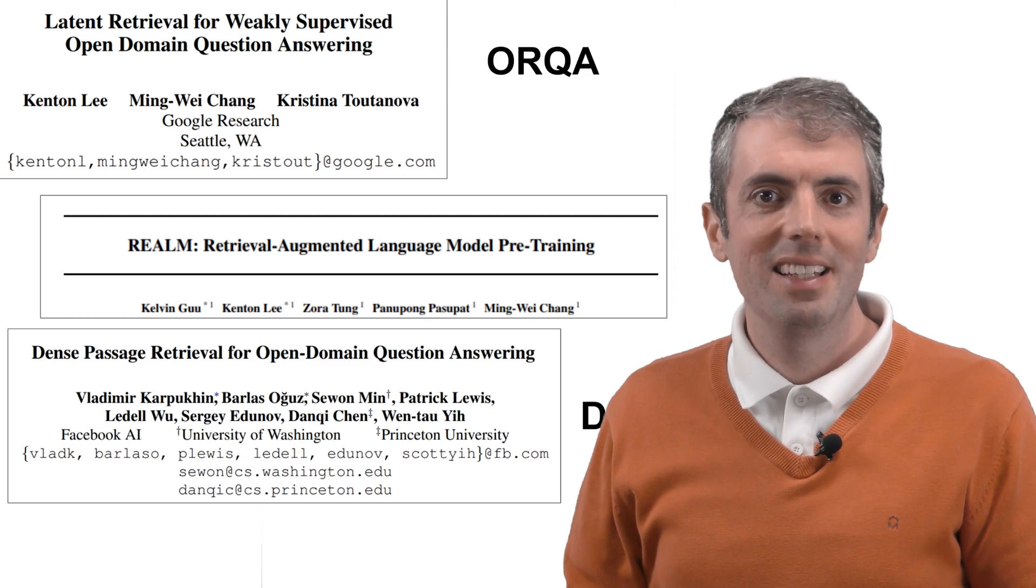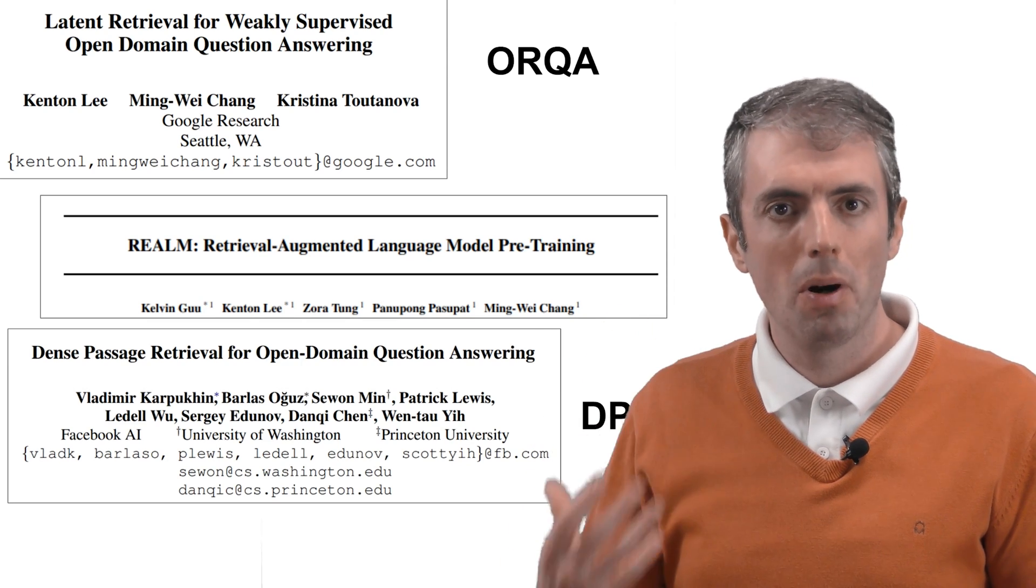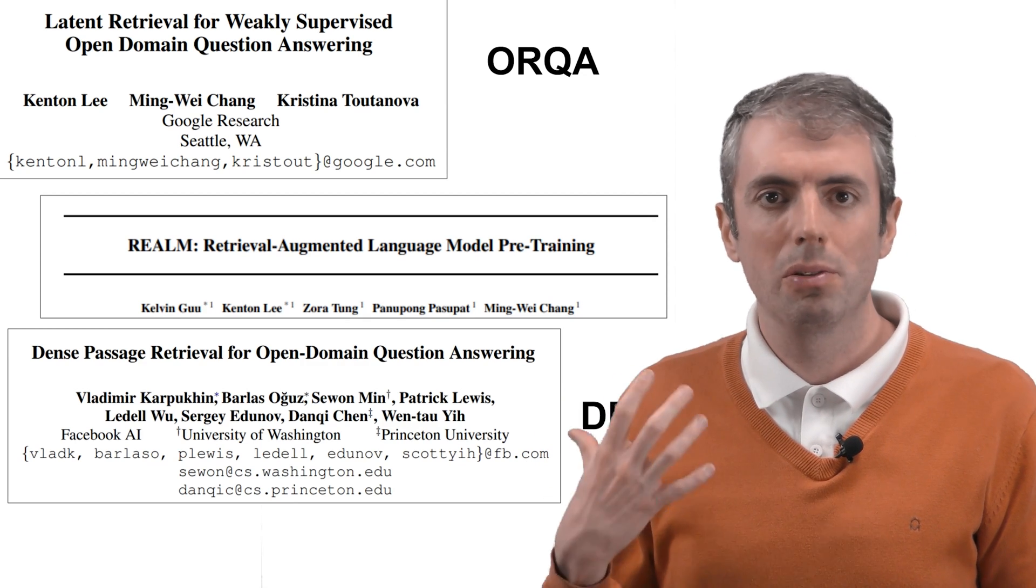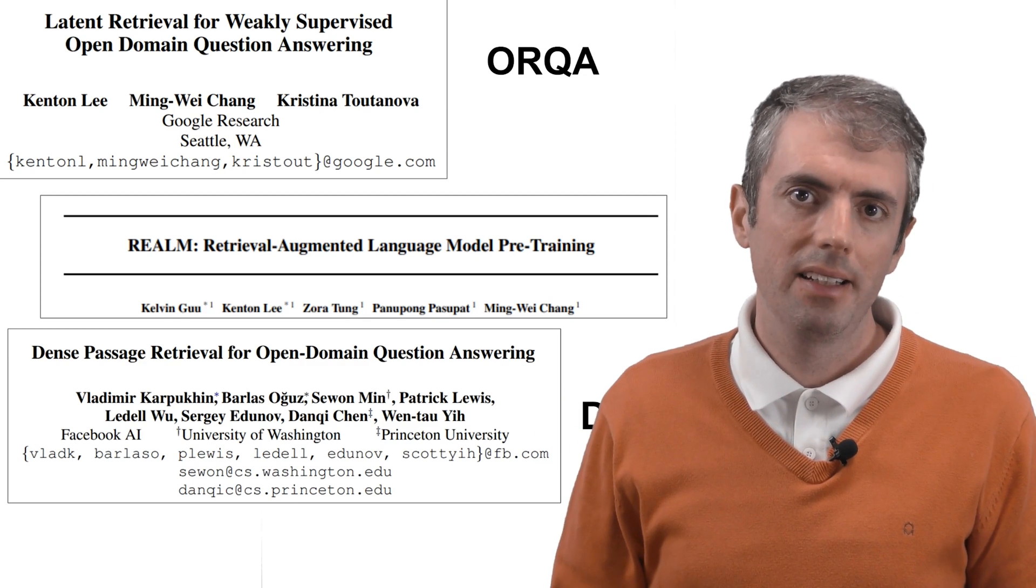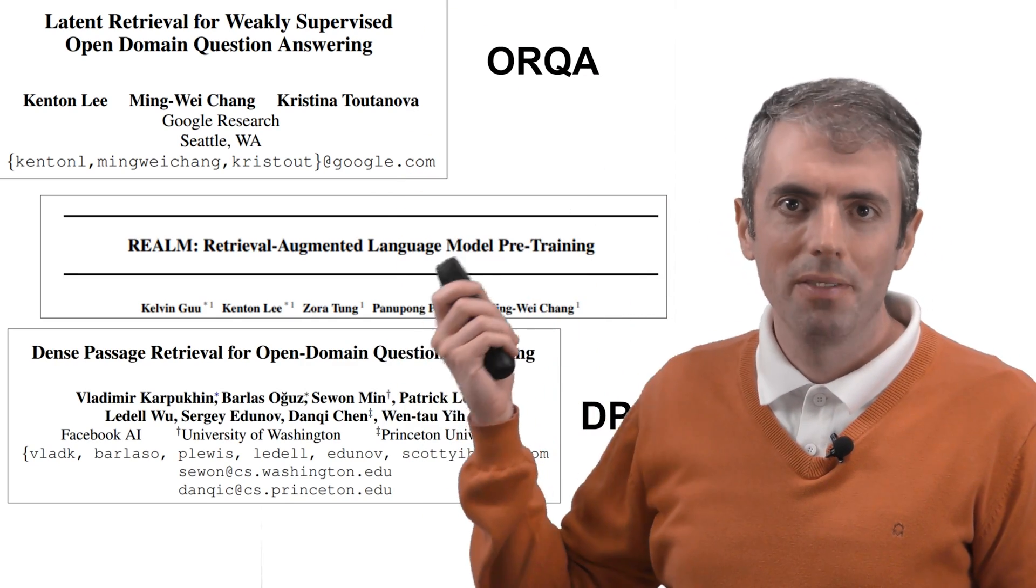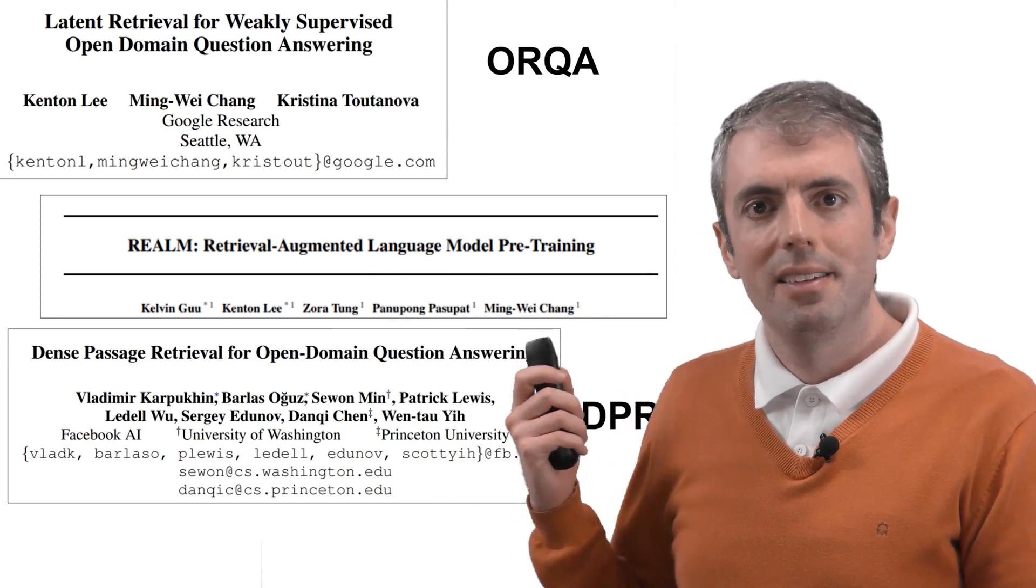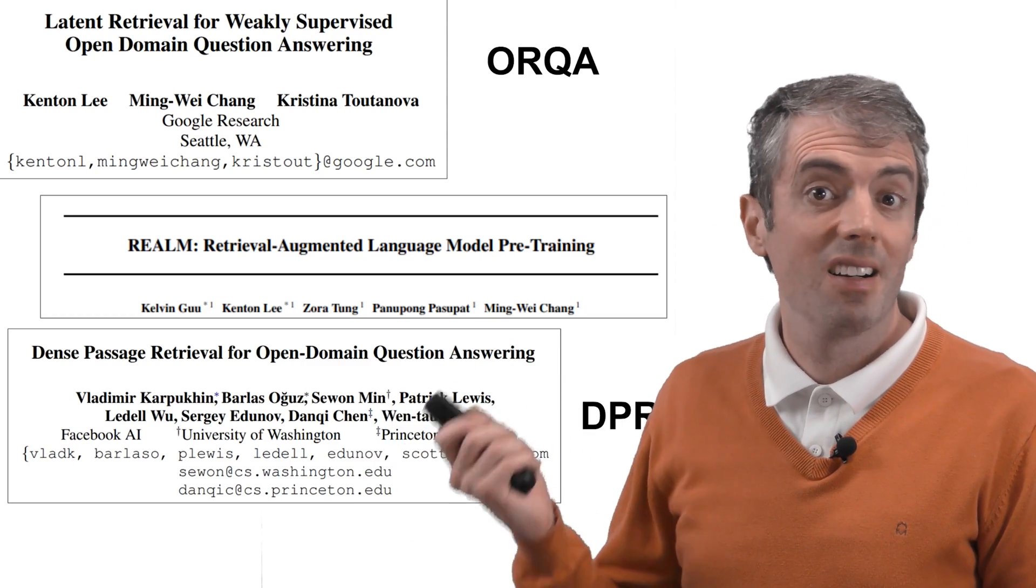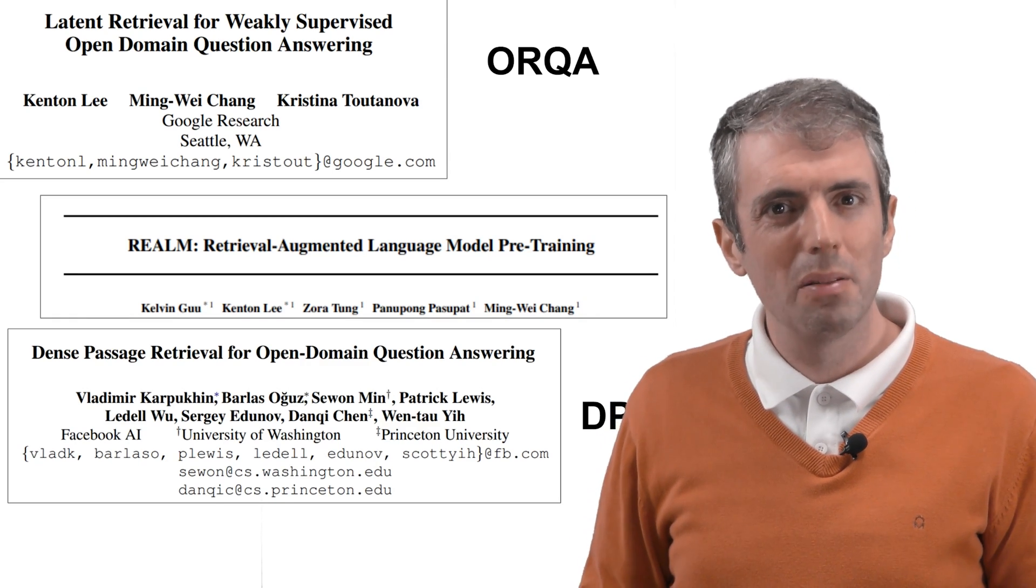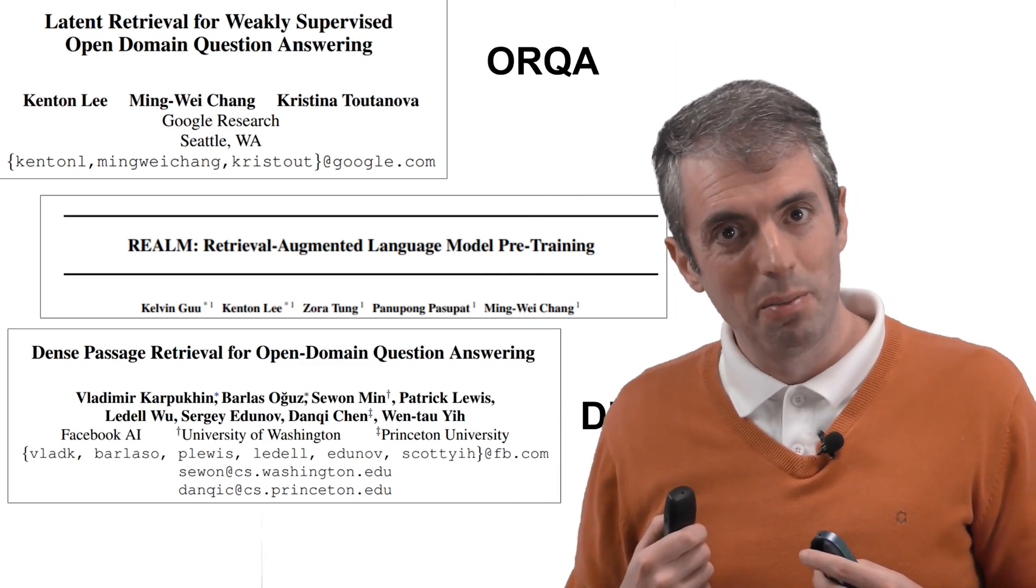There have been a lot of papers recently doing this. At the end of the 2010s, there were three big papers that came out proposing ways of learning encodings for evidence and questions simultaneously. The three papers are ORCA, Open Retrieval Question Answering, Realm, Retrieval Augmented Language Model Pre-Training, and DPR, Dense Passage Retrieval. Dense Passage Retrieval DPR is the latest. It builds on the others and probably has the best code available if you actually want to use this.